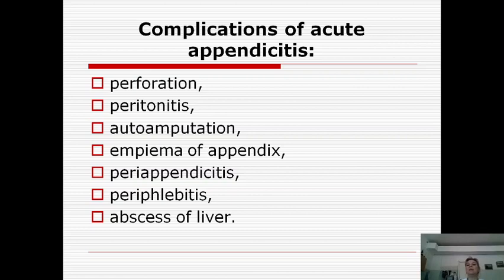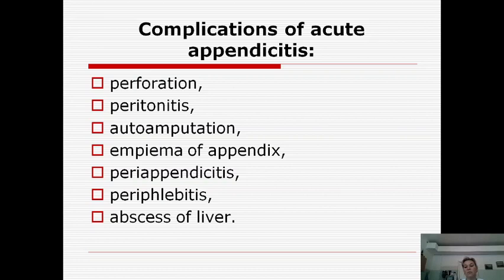Regarding complications of acute appendicitis: perforation may result from ulcer formation, causing peritonitis most often. Auto-amputation can occur due to the gangrenous form. Empyema of the appendix occurs due to the phlegmonous form. Other complications include peri-appendicitis, periphleb itis, and abscesses of the liver as a result of microbial emboli.